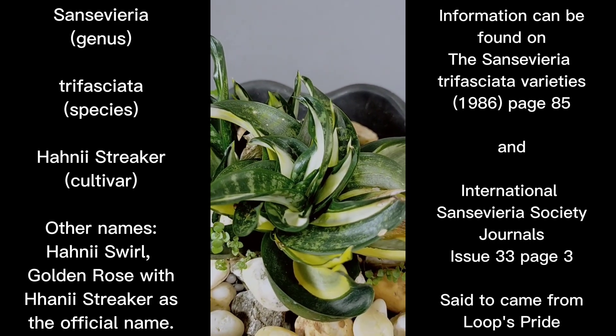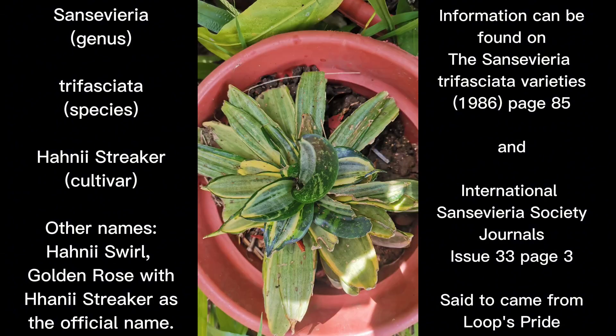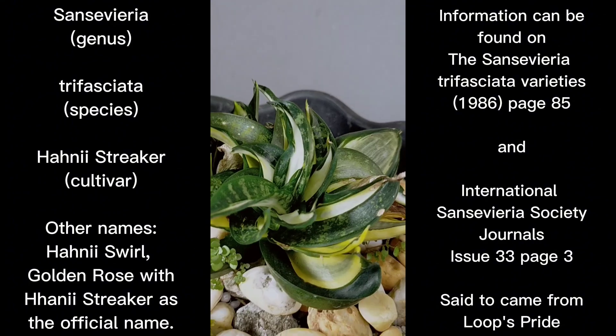Chahinian said that Sansevieria trifasciata Honey Eye Streaker came from a loop sprite mutation. However, I actually have evidence of it coming from something else — we have a video of a Honey Eye Streaker coming from the trifasciata Silver Frost. Silver Frost is a trifasciata cultivar that can produce a wide variety of other trifasciata cultivars. No one believed me when I said that from Silver Frost you can get the mutant Moonshine.